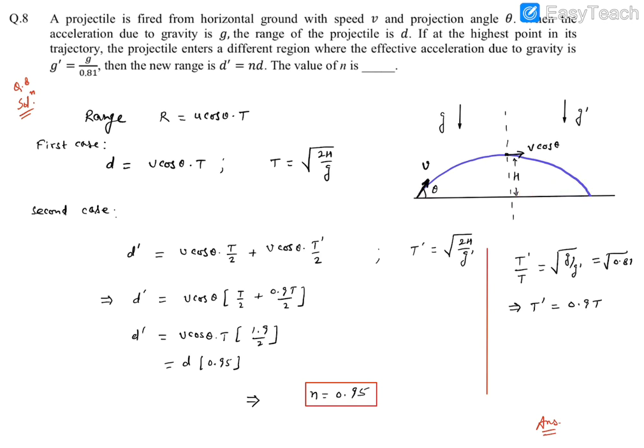We can write like this. This first part will be u cos theta into half of the time of flight of the original journey. And since horizontal component of velocity will not change because it was from the highest point, that distance can be written as v cos theta into t prime by 2, where t prime is the time of flight if this gravity was there. Now, this t prime will be under root 2h by g prime because both will share the same height since this boundary happened at the max height.